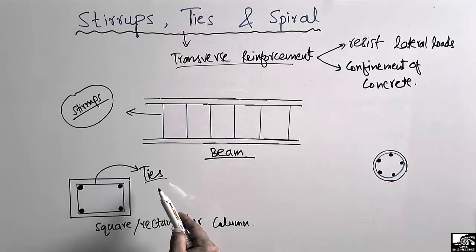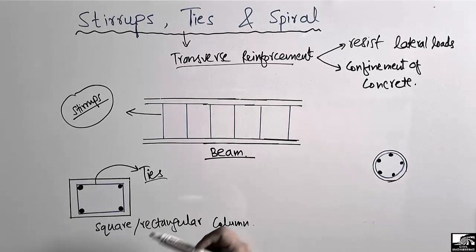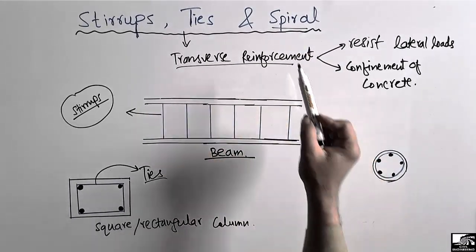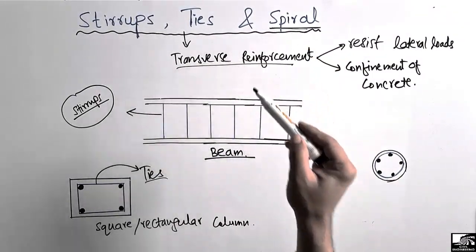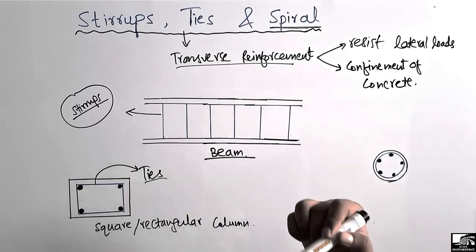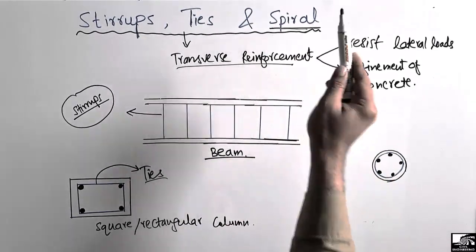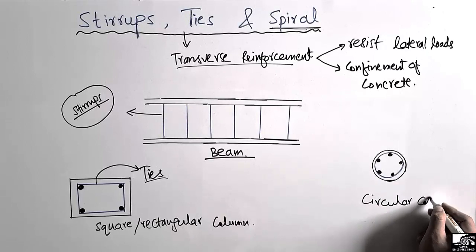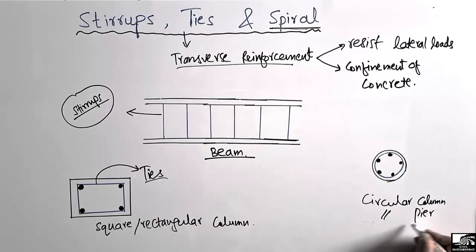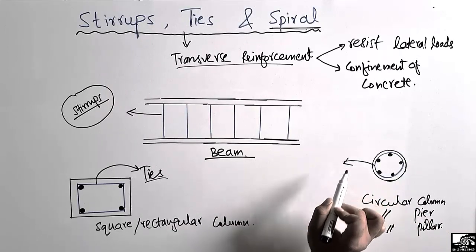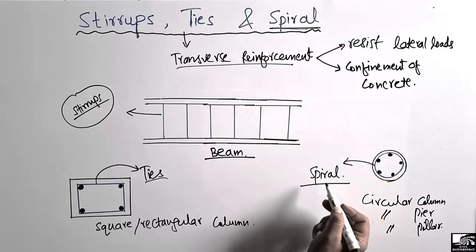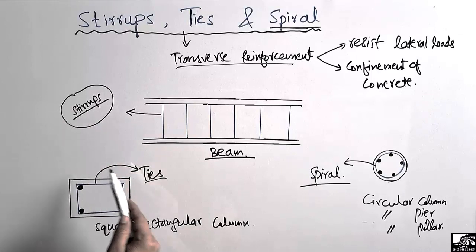Now, what is a spiral? Spiral refers to reinforcement that is spiral in shape. This transverse reinforcement used in a spiral shape is known as spiral reinforcement. If we consider an example of a circular column, pier, or pillar, the transverse reinforcement used in such a circular column is called spiral reinforcement. The purpose of spiral reinforcement is the same as stirrups in beams or ties in columns.